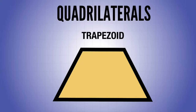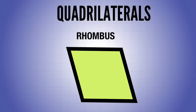A trapezoid is another special quadrilateral. It only has one pair of parallel lines. You can notice that if we were to extend these two lines up, they would eventually meet at a tip where it would look like a triangle.